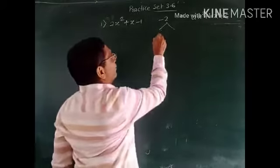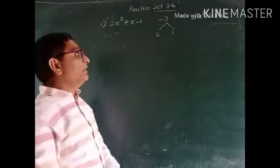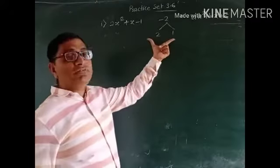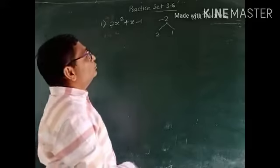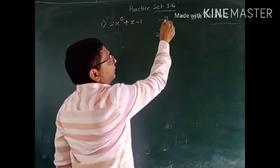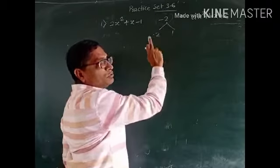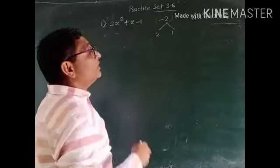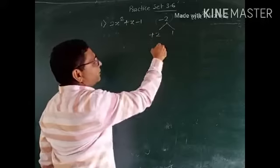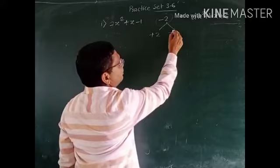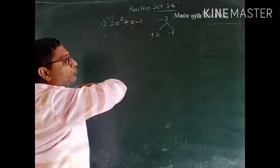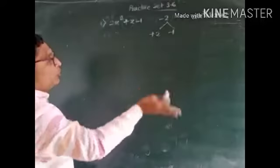2 and 1 are numbers having multiplication 2 and sum 3, so these will not be the factors. Therefore, we have to assign proper signs. Since we have a negative number, one of the two terms will be negative. The positive sign will be given to the greater number, and the remaining number will automatically be negative. Now we have to split this middle term out from the polynomial.